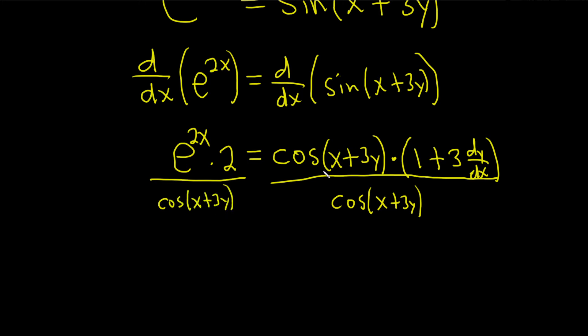So we have, I'm going to put the 2 in the front. So 2e^(2x) over cosine of x plus 3y, and that's equal to 1 plus 3 times dy/dx.